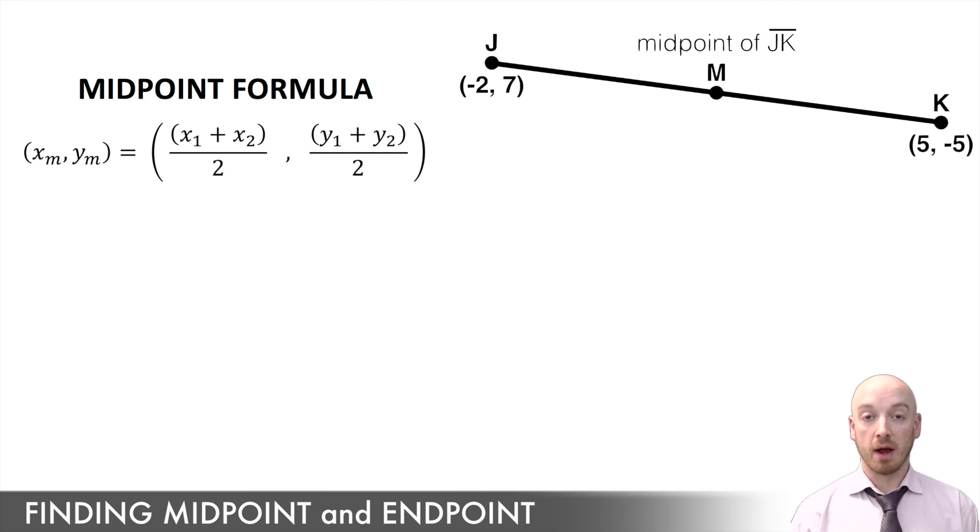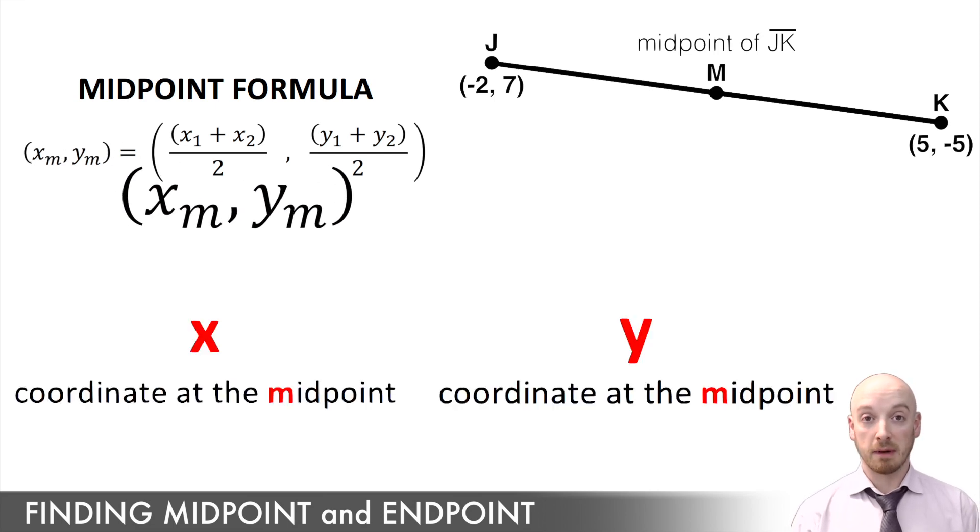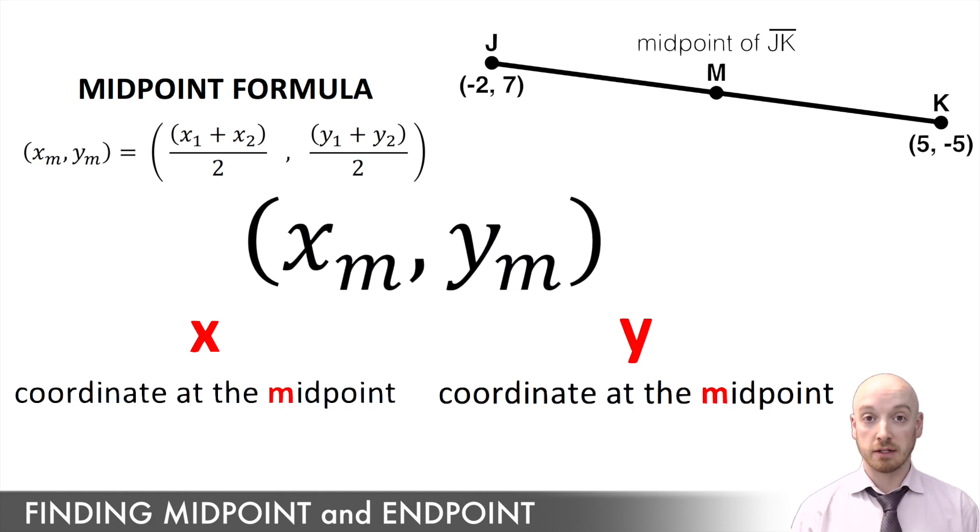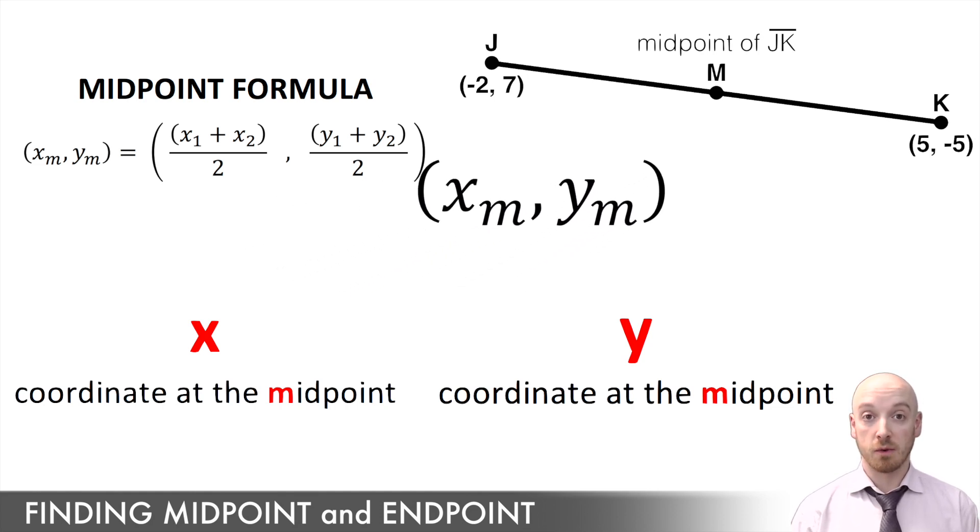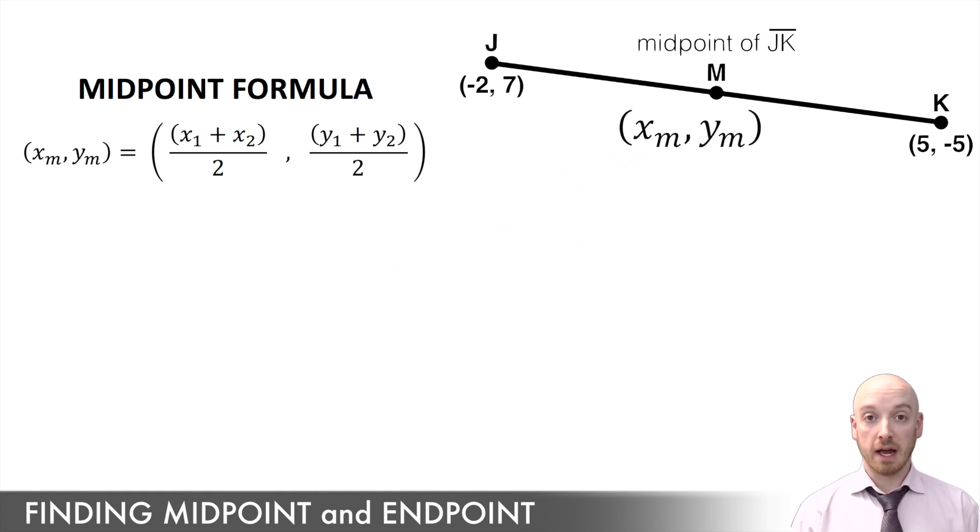Now first up here, this xm, ym stands for x at the midpoint and y at the midpoint. That just reminds me what I'm looking for in this question. And I'm going to get those x1, y1, and x2, y2 values from my endpoints. Now I can label the endpoints x1, y1, and x2, y2 in any order, as long as x1 and y1 stay together in the same set of brackets, and x2 and y2 are labeled at the other endpoint in the other set of brackets.